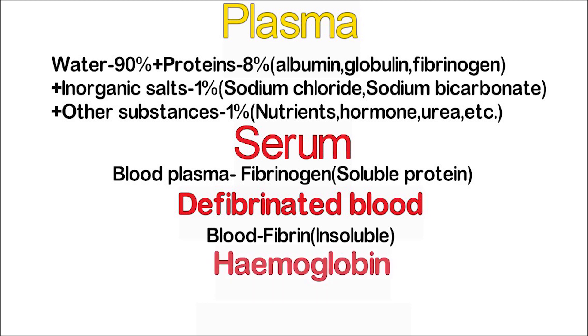Hemoglobin is composed of hemin and globin. It is a respiratory pigment; hemin constitutes the iron part and globin is the protein part.